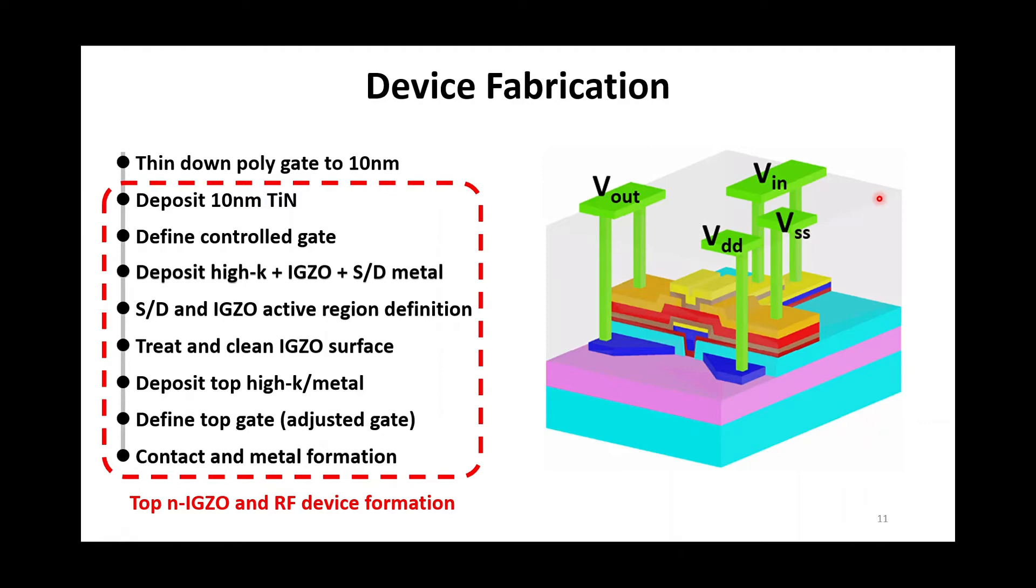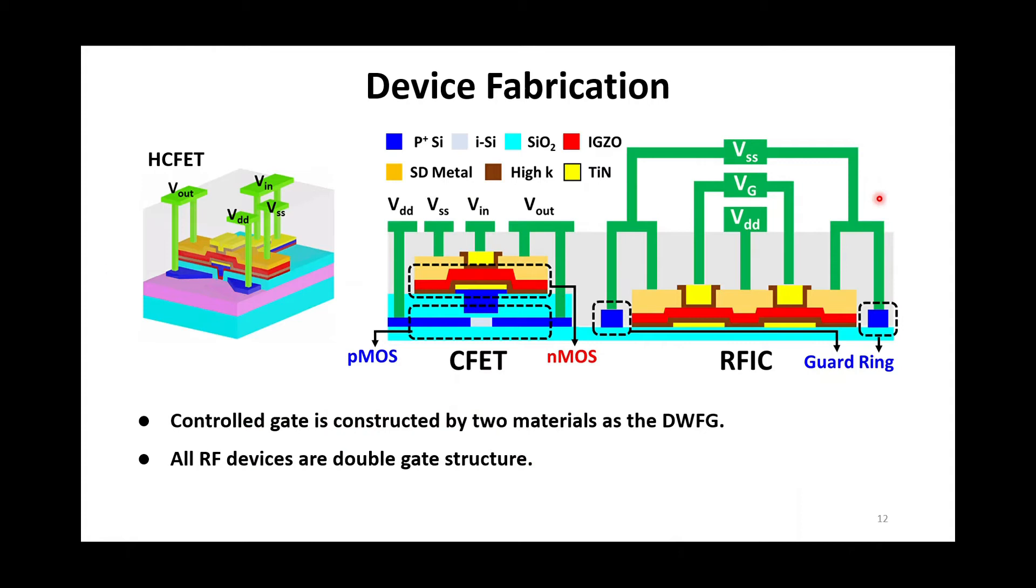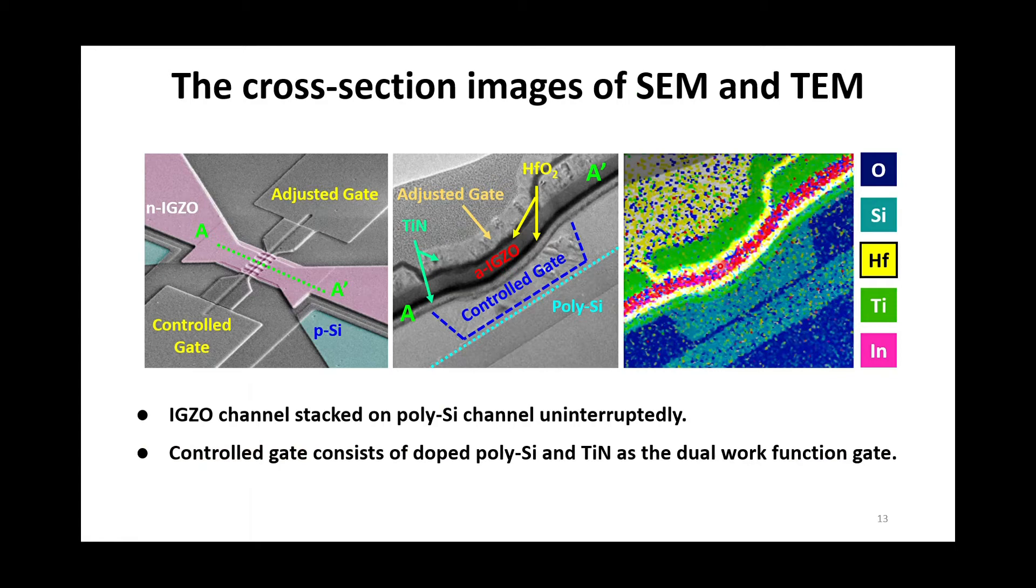This slide is the ideal condition of HC-FET and its cross-section along the channel. Here is the control gate and this is adjusted gate. In terms of the RF IC, all devices are double-gate structure. And these are the top-view SEM image and cross-section TEM images along the channel.